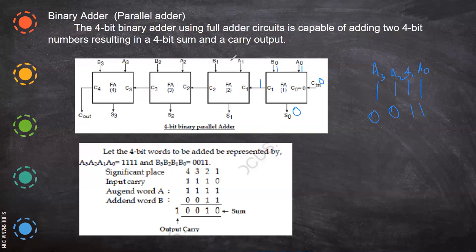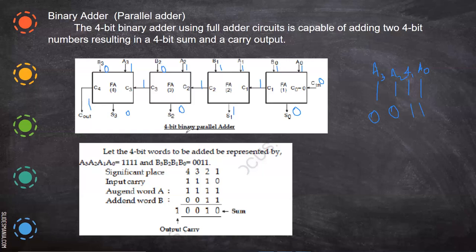The next inputs are A1=1 and B1=1, plus the carry-in of one — so one plus one plus one equals one, giving a sum of one and a carry of one. Next, A2=1 and B2=0 with carry-in one: the sum is zero and carry is one. Then A3=1 and B3=0 with carry-in one: one plus one gives a sum of zero and a carry output. Joining the outputs, the final result is 0 1 0 0 with a carry out — that is how we parallelly add bits using the binary adder.